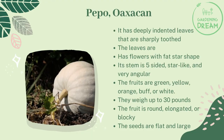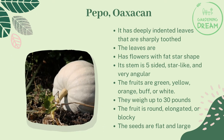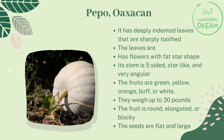Pepo, Oaxacan: It has deeply indented leaves that are sharply toothed. Has flowers with a fat star shape. Its stem is five-sided, star-like, and very angular. The fruits are green, yellow, orange, buff, or white. They weigh up to 30 pounds. The fruit is round, elongated, or blocky. The seeds are flat and large.